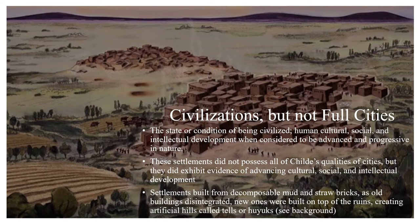On another note, I want to discuss the materials used to build these settlements. These settlements were usually built from mud and straw bricks. These bricks are highly decomposable — they break apart over time as a result of weather and human use. As these buildings would disintegrate, new ones would be built on top of the ruins, creating artificial hills, which we call tells or hoyuks. The breakdown of these buildings also creates layers of strata, which can be investigated by archaeologists.